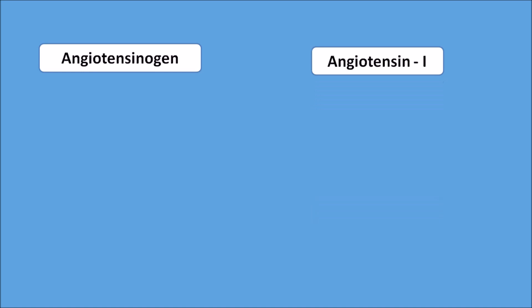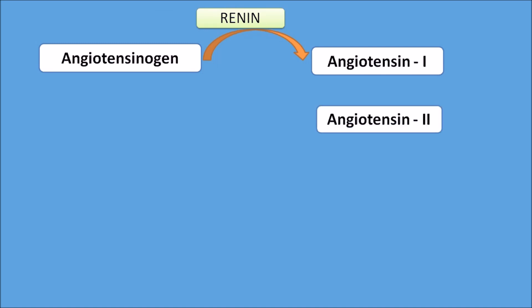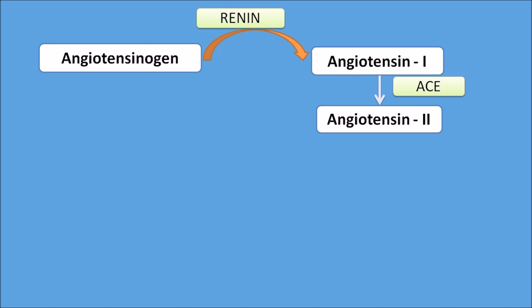Angiotensinogen is a precursor for angiotensin I. Angiotensinogen is converted to angiotensin I by the enzyme renin, which is released in the kidney. Angiotensin I is then converted to angiotensin II by the enzyme ACE — angiotensin converting enzyme.